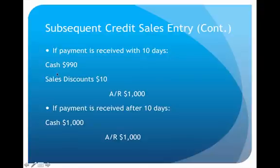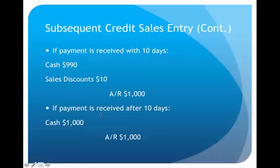On the credit side I eliminate the receivable with a credit to Accounts Receivable. Notice that cash and accounts receivable do not match, so to make this journal entry balance, I need an extra $10 debit which goes to Sales Discounts — an expense account that helps me keep track of all the discounts given to customers. It's also possible that we may not receive payment until after that 10-day period has expired. If that's the case, we would simply debit Cash $1,000 and credit Accounts Receivable $1,000 — they have to pay the entire amount.